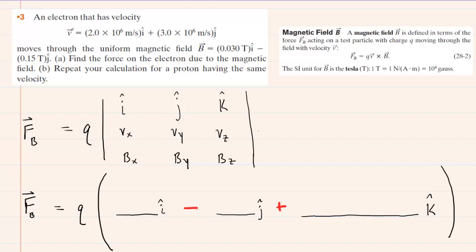Here we have an electron that is moving through a uniform magnetic field. The question gives us the x component and the y component of the electron's velocity — i hat refers to the x component and j hat refers to the y component. Similarly for the magnetic field, they give us the x component and the y component. We are asked to determine the force on the electron due to this magnetic field.